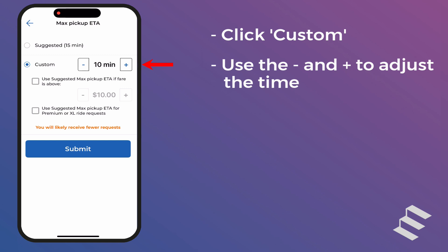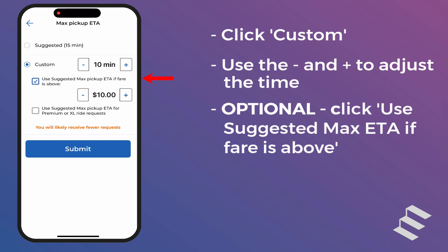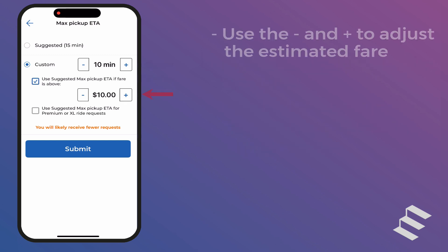If you are willing to drive further if the fare is above a certain amount, you can select the Use Suggested Max ETA if fare is above checkbox. Use the plus and minus buttons to adjust the fare to an amount above which you are willing to travel up to the Suggested Max Pickup ETA. For example, if you are willing to travel further to pick up riders if the fare is at least $16, set the value to $16.